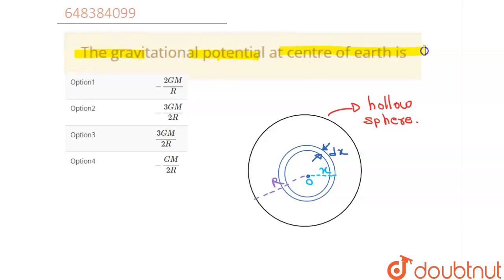So let's derive this. This is our Earth, and we have considered a very thin spherical shell that is of the thickness dx and at the distance of x from the center of the planet Earth.